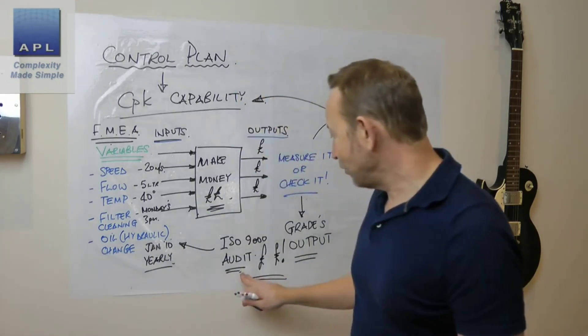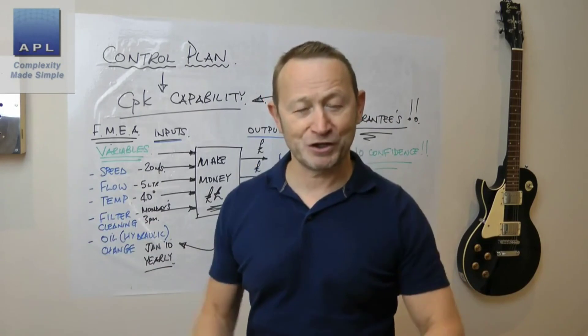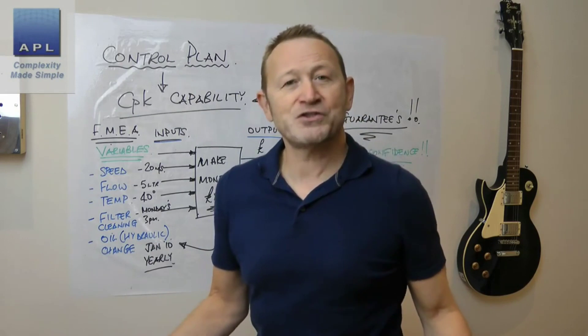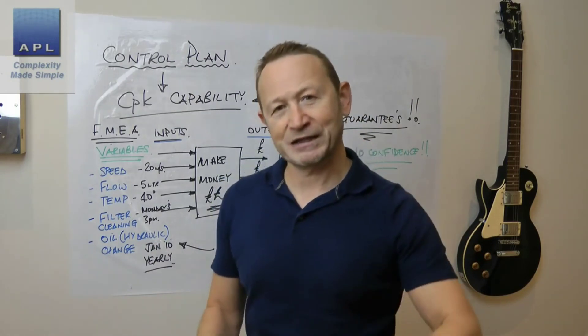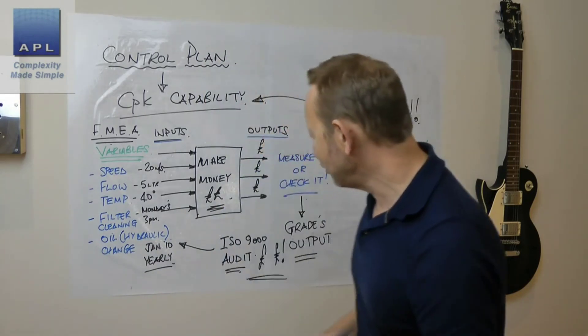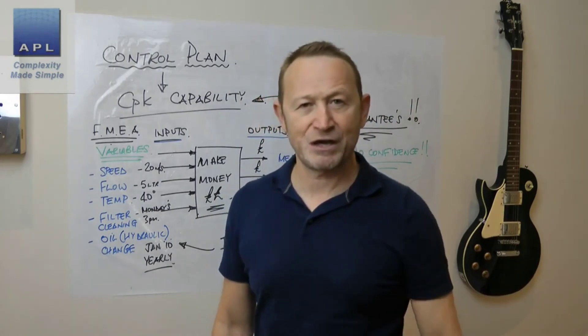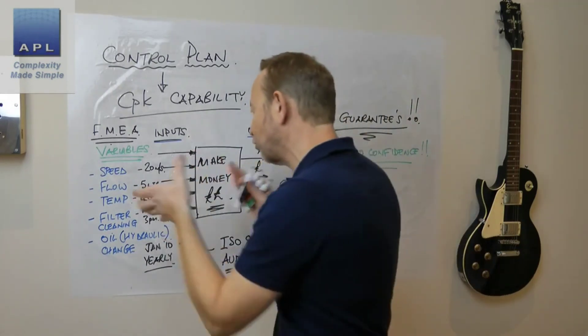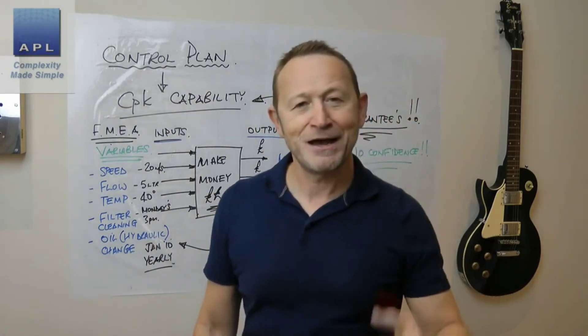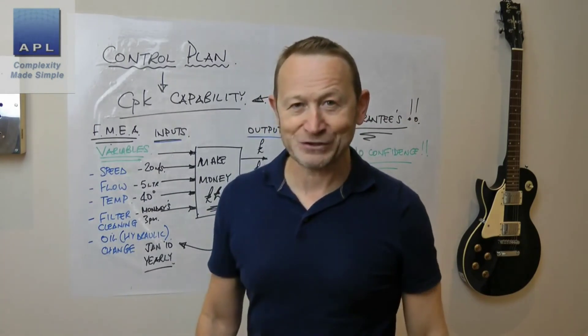FMEA, control plan, ISO 9000—they make money. That's what they're supposed to do. They are not supposed to bury you in paperwork. If the control plan is not about inputs, it's not about making money—it'll just bury you in paperwork and you'll never do it properly. You'll just end up tidying up all your paperwork and hiding all the errors when the ISO 9000 auditor is due. If you're a senior manager watching this, don't be so pathetic. Get your ISO 9000 to make money, create great control plans out of your FMEA, and make piles and piles of cash, because that's what control plans are.